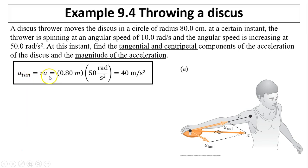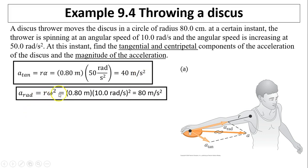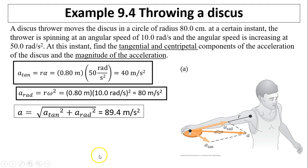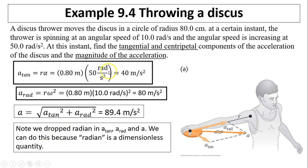So a_tan is R times alpha. Plug it in. a_rad is R times omega squared. Then A is just a_tan plus a_rad using Pythagorean theorem. Now, you probably wonder what happened to rad? Remember radian is a ratio of the arc's length over the radius. Both have meters. So radian is really a dimensionless quantity, has no dimensions. That's why we dropped the radian.